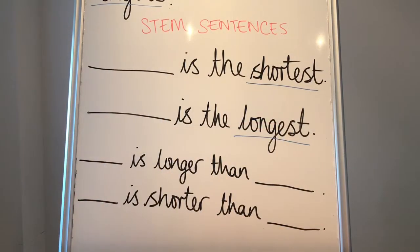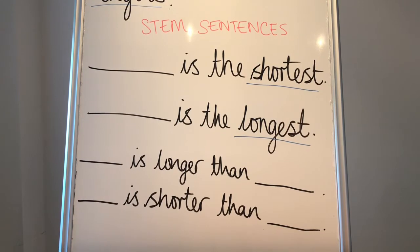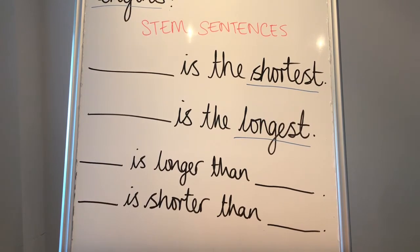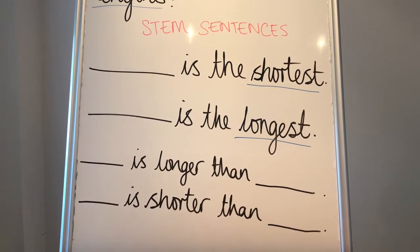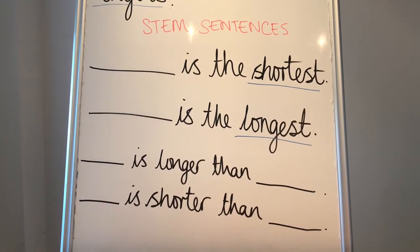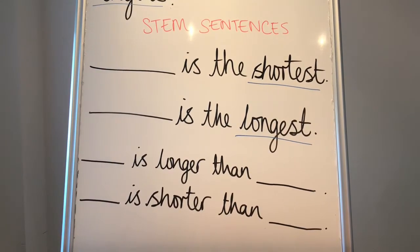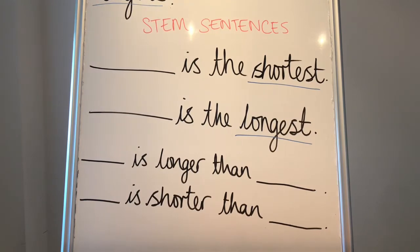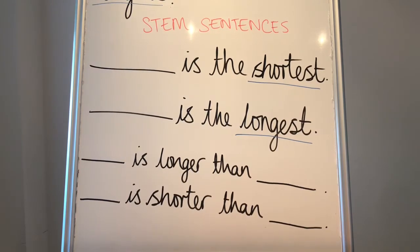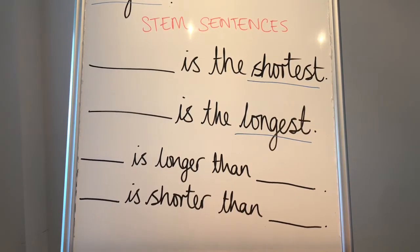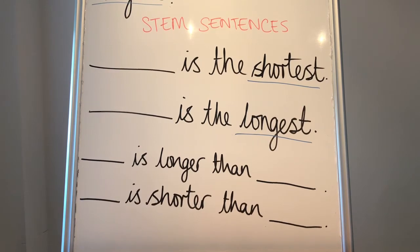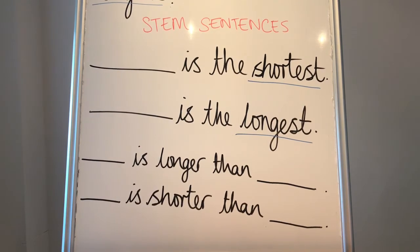Now I'd like you to find five objects in your home and order their lengths from shortest to longest or longest to shortest. Please complete the stem sentences to describe your ordered objects and upload your work to Tapestry or Facebook. Thank you for watching!